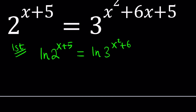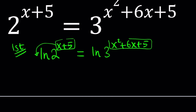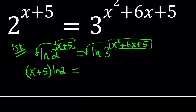What that does is, if you log an exponential expression, then you can actually bring the exponent down. So this x plus 5, you can write it as a coefficient, and this one you can bring it down as a coefficient too. So now let's go ahead and do that. We get x plus 5 multiplied by ln 2 equals x squared plus 6x plus 5 multiplied by ln 3.